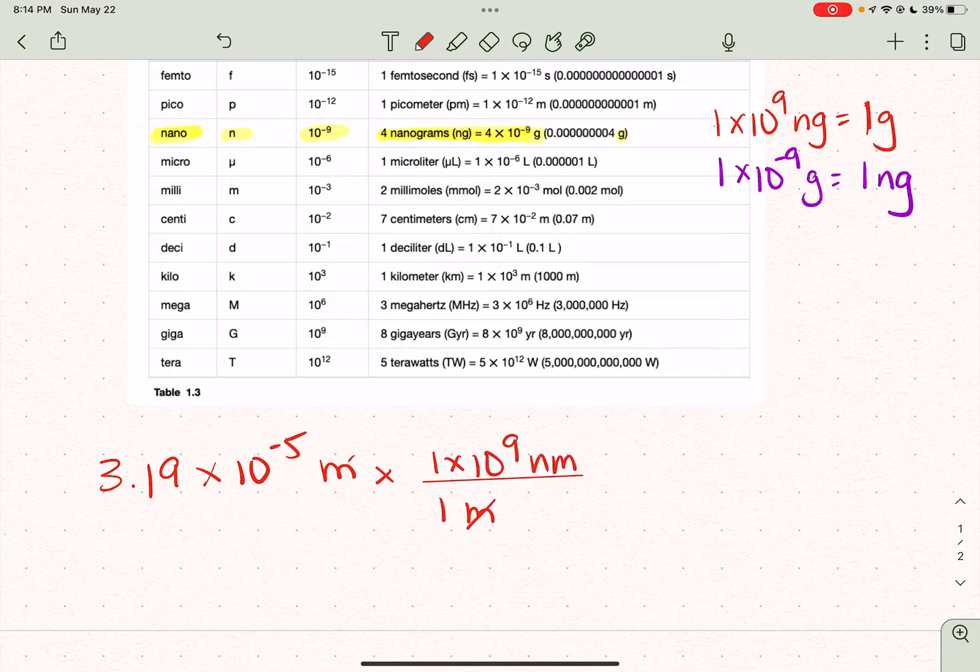So now my meters cancel out here, but I'm left with all these numbers. And when I multiply this out, I get 3.19 times 10 to the minus 5th times 1 times 10 to the 9. I get 319,000. Wait, that's not 319,000. That's 31,900 nanometers.